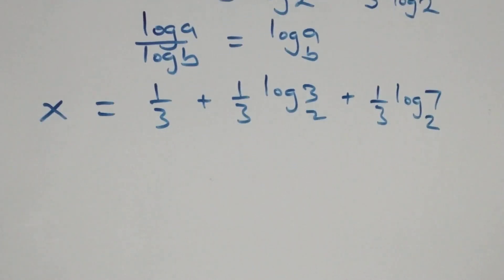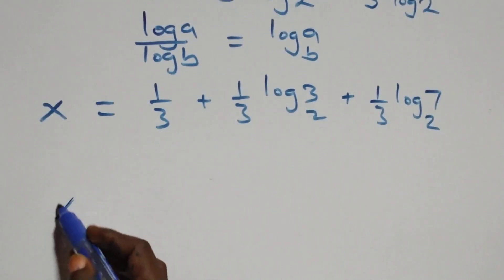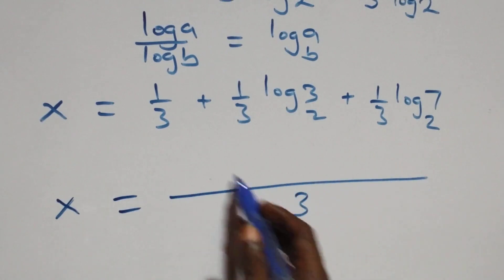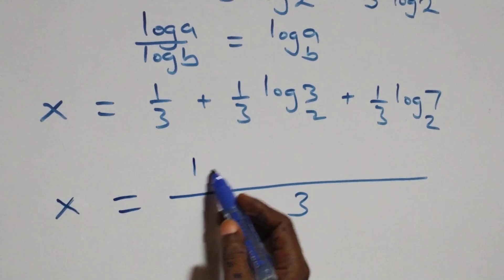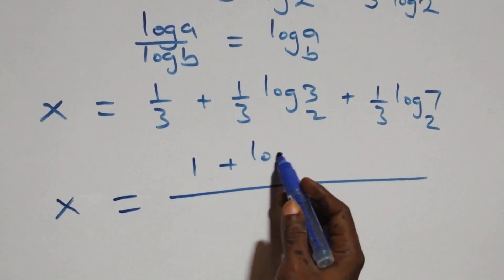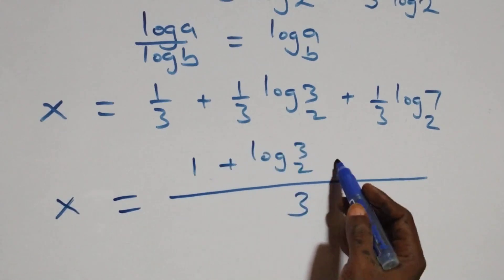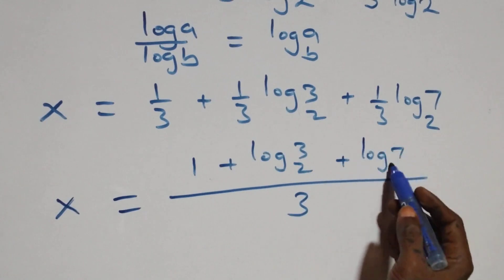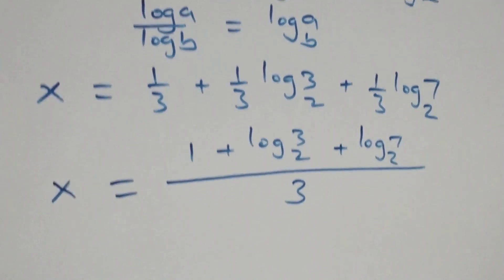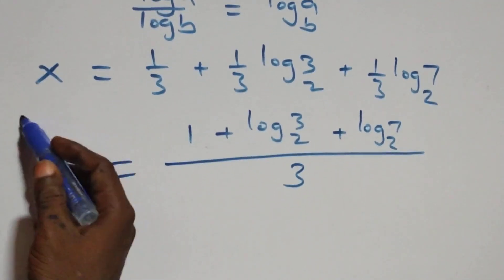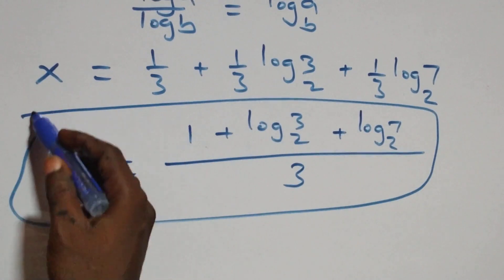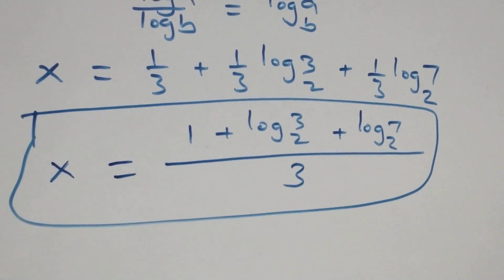We bring this together as a single fraction with denominator 3: x equals (1 + log₂(3) + log₂(7)) all over 3. Let's verify this satisfies the original problem.